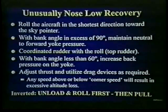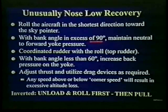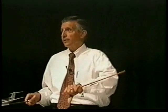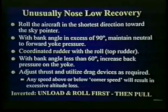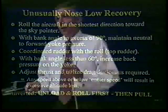Now let's go to bullet number two. With bank angle in excess of 90 degrees — and this is where the airline accident history goes right down the tubes — we must maintain neutral to forward yoke pressure. Neutral to forward is a big range.